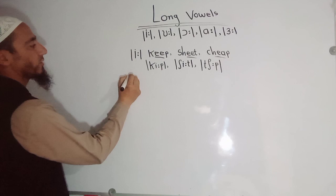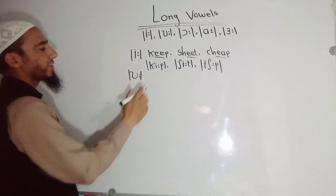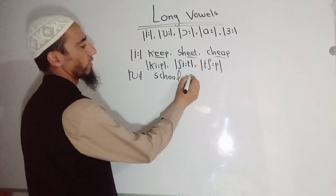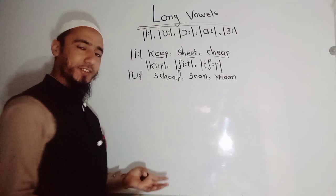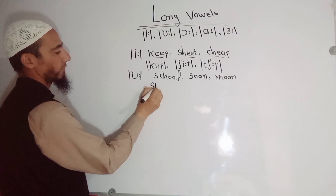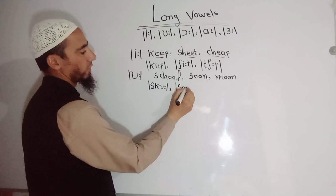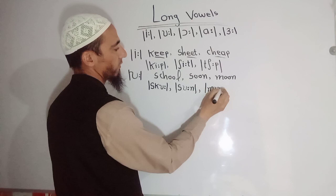The next sound is the uː sound. For example, I am writing the word 'school.' Another word is 'soon,' and another is 'moon.' Now I am going to convert them into phonetic transcription. School is written like this using the uː symbol. The next one is soon. And the last one is moon.